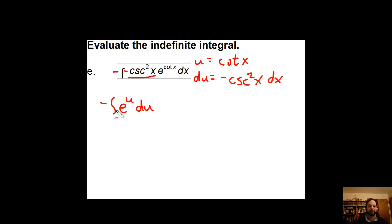Now take a look at what my integral has become. It's negative integral of e to the u du. And e to the u, one of my favorite functions, that integrates to e to the u plus c, which if I rewrite back in terms of x, is simply negative e to the cotangent x plus c.